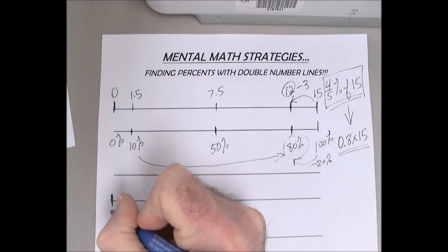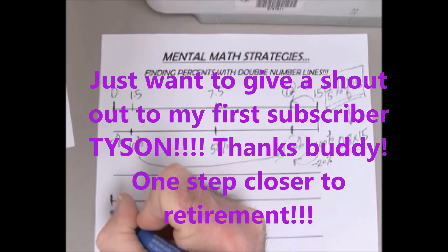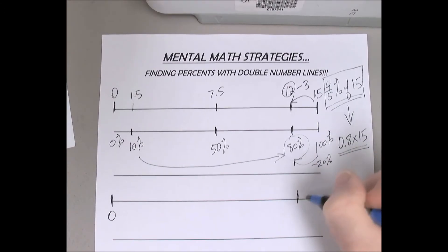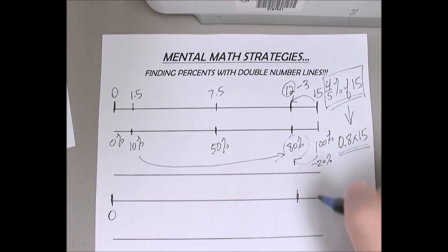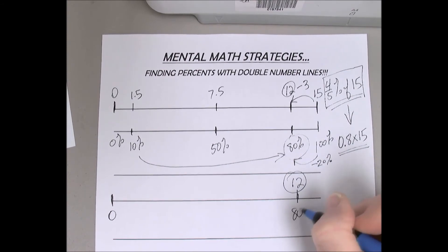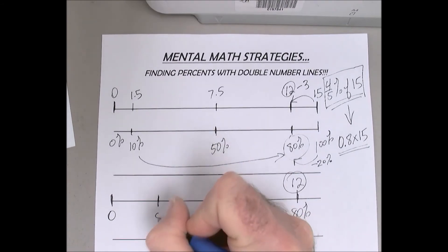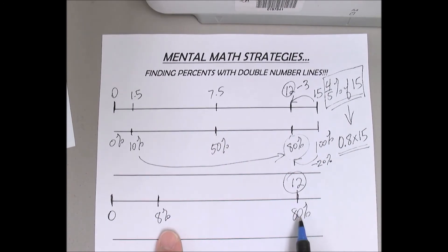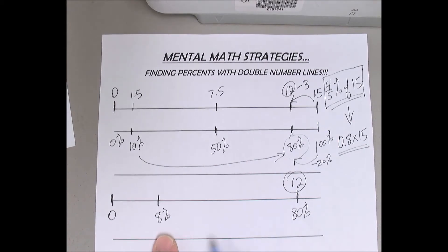Let's do a close-up of just the distance between 0 and 12 here. 12 is 80 percent. What would 8 percent be? How can I make a relationship, Matthew, between 80 and 8 percent? Say it a little bit louder. Divide by 10. Divide by 10?